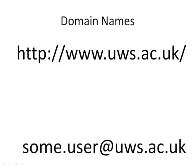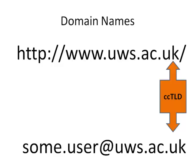What you're probably used to working with on the internet is domain names. There are two examples: a web page URL — a Uniform Resource Locator — and an email address. The domain name is made up of different parts. There's a top-level domain: in this case .uk, which is a country code top-level domain. If it's something like .com, .net, or .org, it's simply known as a top-level domain. The .ac.uk identifies an academic network and is a second-level domain.